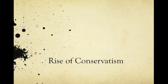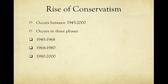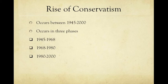The rise of conservatism. Conservatism is basically the opposite of liberalism, which we discussed in another lecture. The rise of conservatism occurs between 1945 and 2000, and it occurs in three phases: 1945 to 1968, 1968 to 1980, and 1980 to 2000 and beyond.